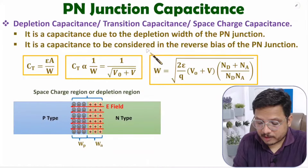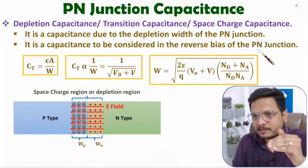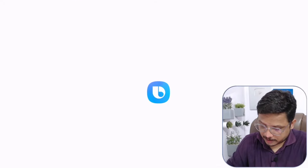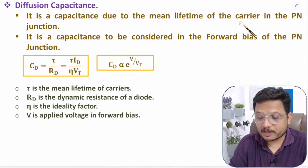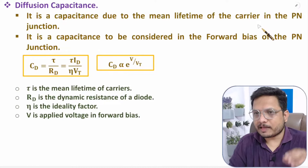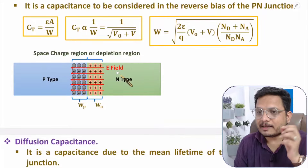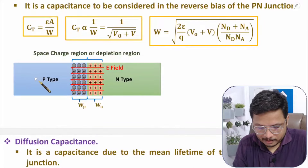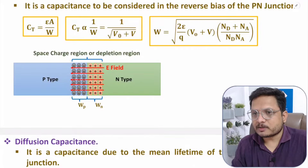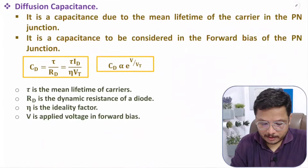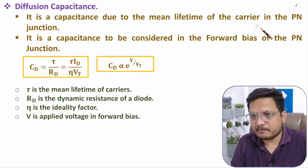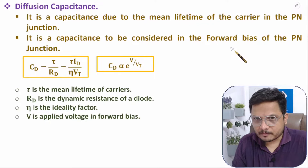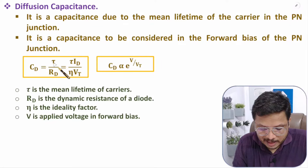We usually consider depletion capacitance for reverse bias. Now let us understand diffusion capacitance. Diffusion capacitance is there due to the mean lifetime of the carrier in the p-n junction. When we observe the charge carriers, there will be a recombination process — as you move far from the junction, recombination is slower, and larger recombination occurs nearer to the junction. Diffusion capacitance is considered for forward bias of the p-n junction.